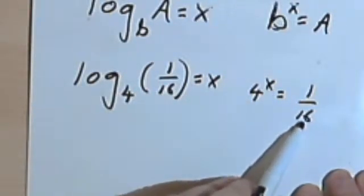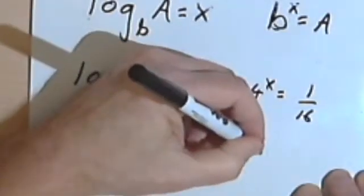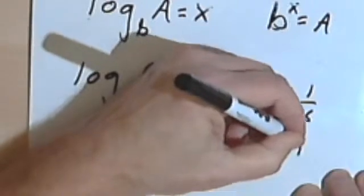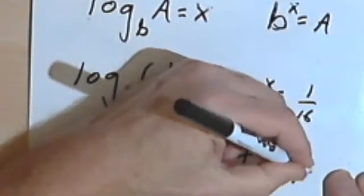So if we've got 4 raised to some power is 1 over 16. Let's see what we can do with this 16. Well, 16 is 4 squared. So let's change that. 4 to the x equals 1 over 4 squared.